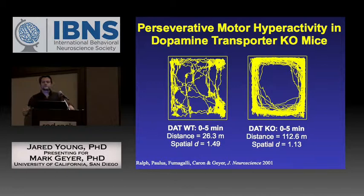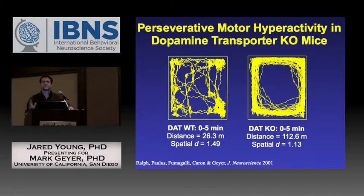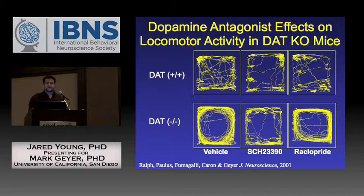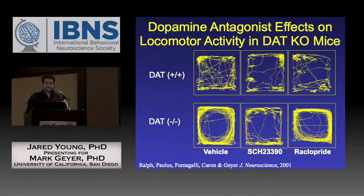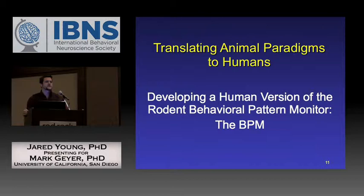Another commonly used animal test is measuring activity. Dopamine transporter knockout mice placed in an open field show higher activity with a race-track pattern running around the outside. We can measure XY coordinates, distance, and spatial D. D2 antagonists like raclopride can attenuate these changes. Mark and Bill Perry then sought to take this further, making it relevant to human studies — building a better bridge between animals and humans.